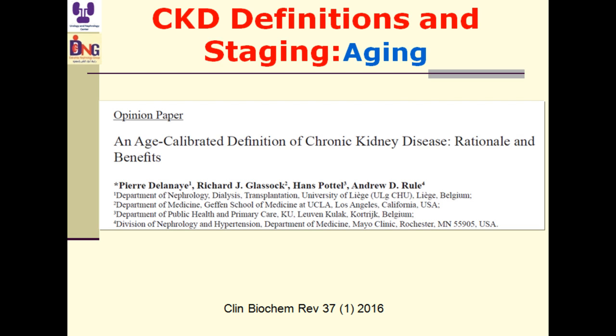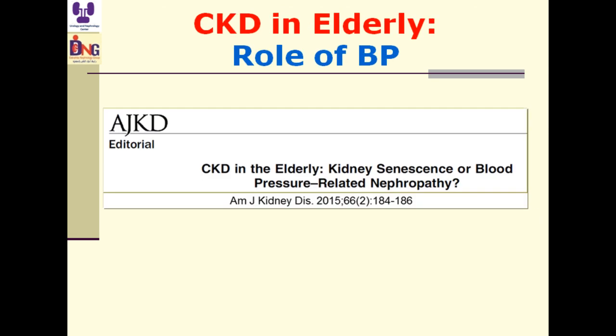An opinion paper examined the GFR cutoff of 60 mL/min for CKD definition at different ages. The authors suggested that 60 underestimates the problem in persons under 40 years — 75 mL/min is better for that age. For persons above 65, using 60 overestimates the problem, and 45 mL/min is more appropriate. CKD in the elderly may reflect hypertension in middle age, so blood pressure should be carefully managed.